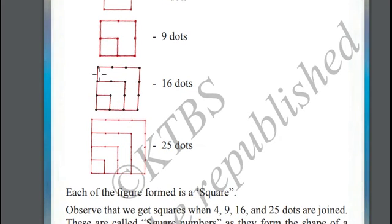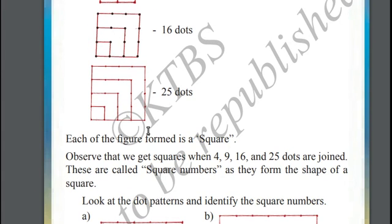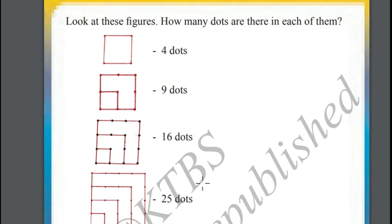In the third example, there are sixteen dots. Four times four equals sixteen. In the fourth example, there are twenty-five dots. Five times five equals twenty-five. All these diagrams are squares.